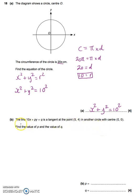So part B, you've got the line 10x + py = q is a tangent at (5, 4) in another circle with a centre at (0, 0). Find the value of p and the value of q. So for me, again, it would be useful to have a diagram for this one. We haven't got it because it says it's a different circle. So I'm just going to draw it on this diagram that we've got up here. You can draw yourself another one.